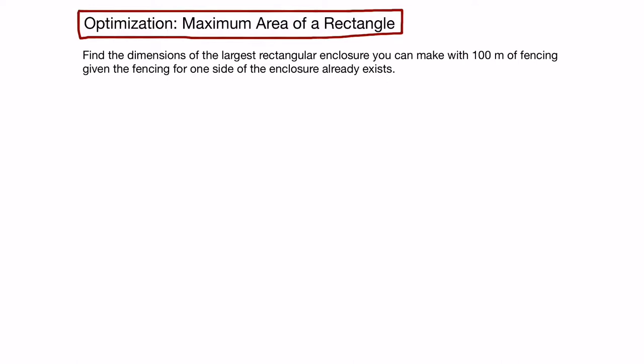In this optimization problem, we have to find the dimensions of the largest rectangular enclosure. That means we're maximizing the area of a rectangle that we can make with 100 meters of fencing, given that the fencing for one side of the enclosure already exists.